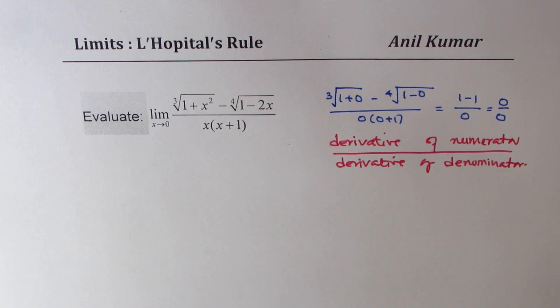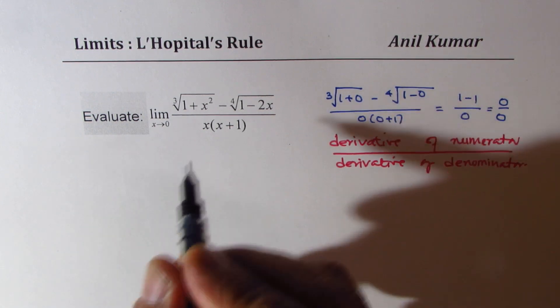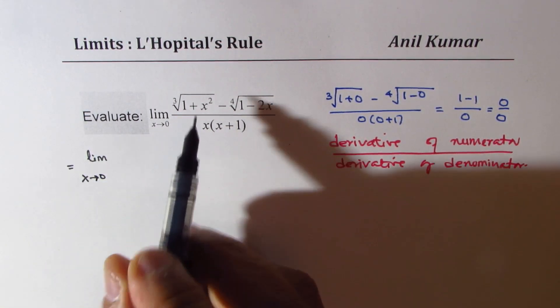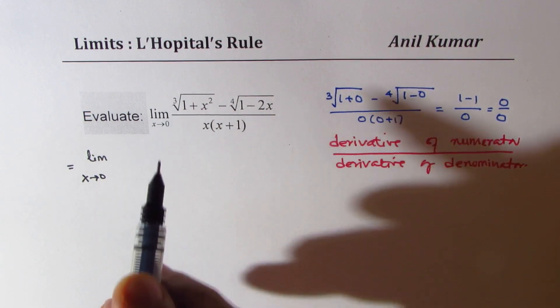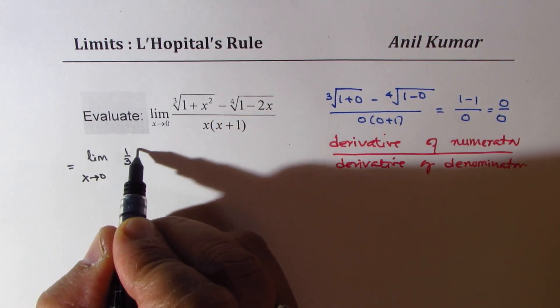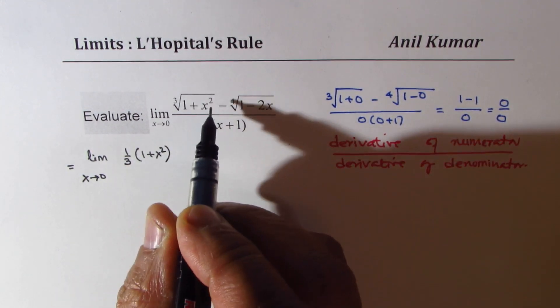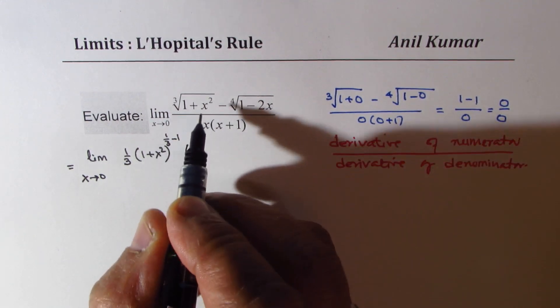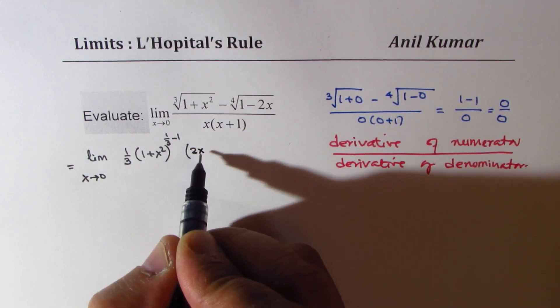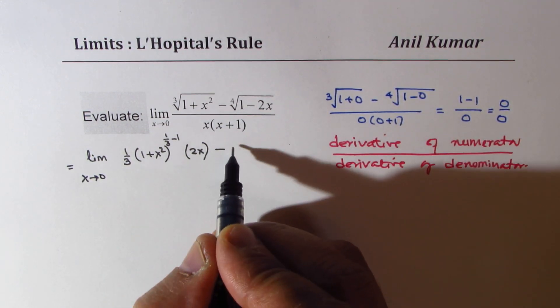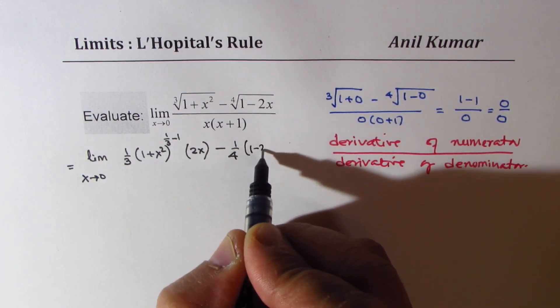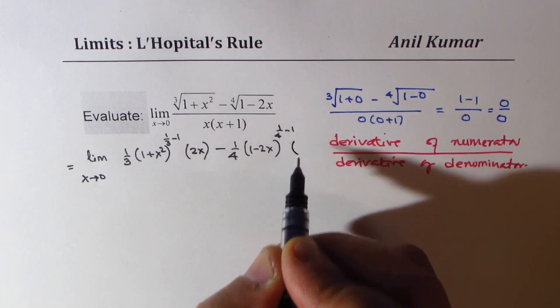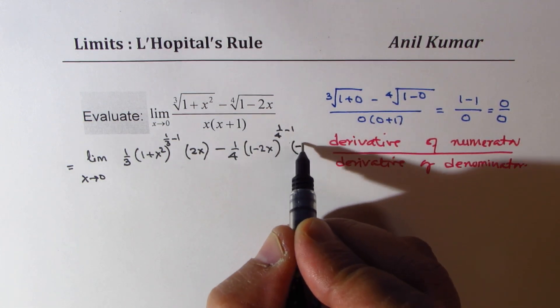So, let's find the derivative of the numerator. We can rewrite this expression as limit x approaching 0. Now, this is the third root, so it is one third of 1 plus x squared to the power of 1 over 3 minus 1 times derivative of inside function, which is 2x. Minus, derivative of this portion is 1 fourth of 1 minus 2x to the power of 1 over 4 minus 1 times derivative of inside function, which is minus 2.